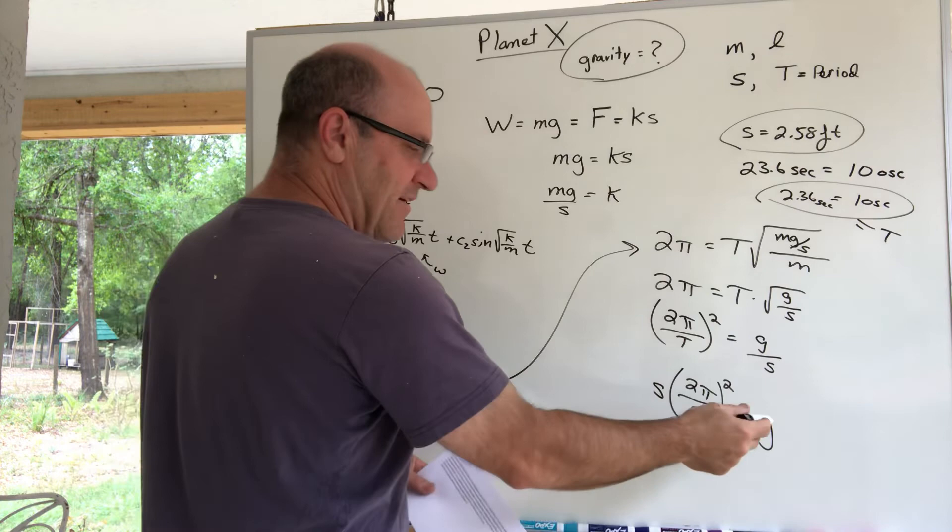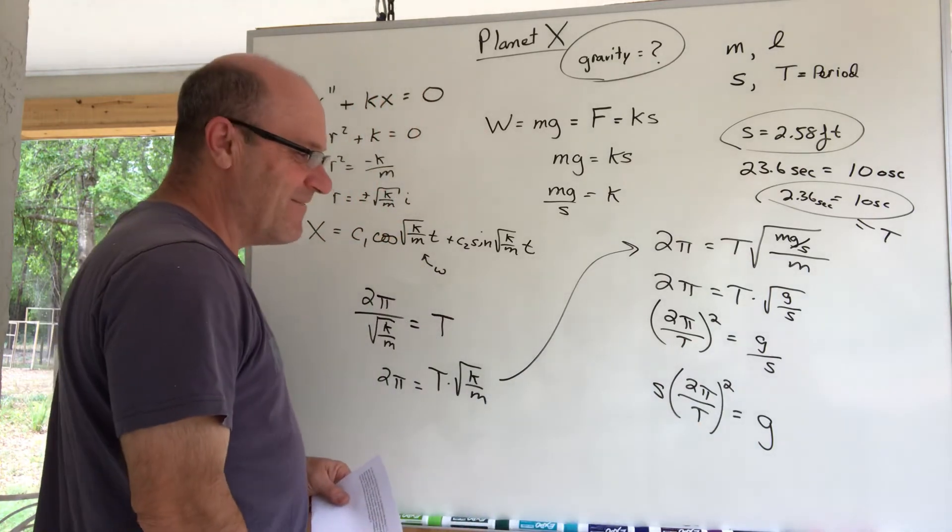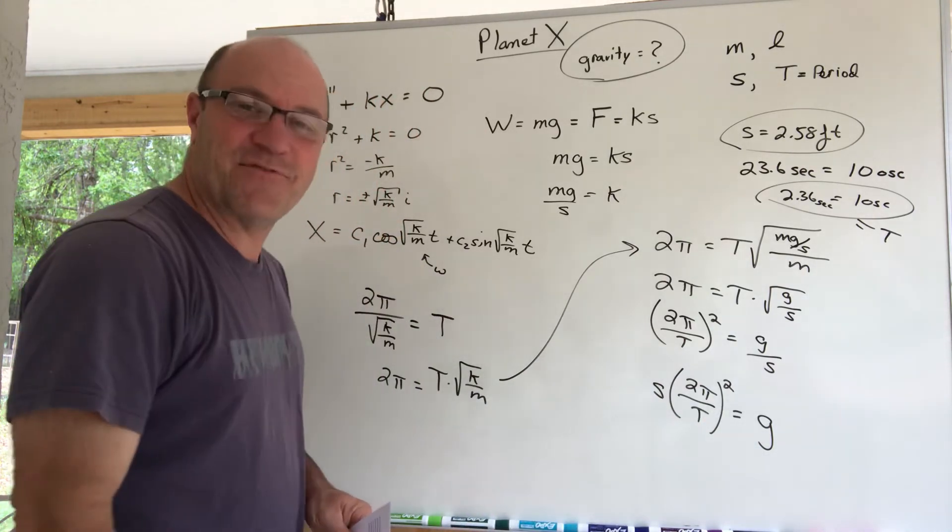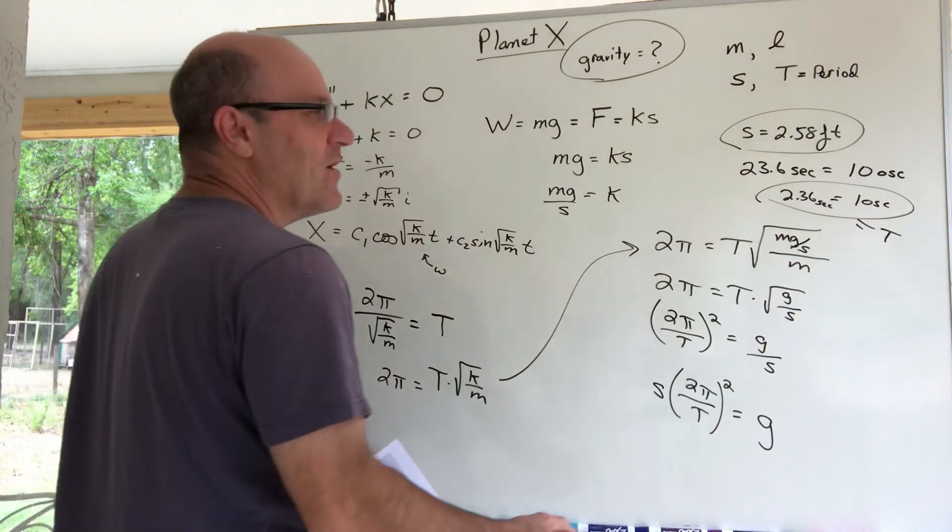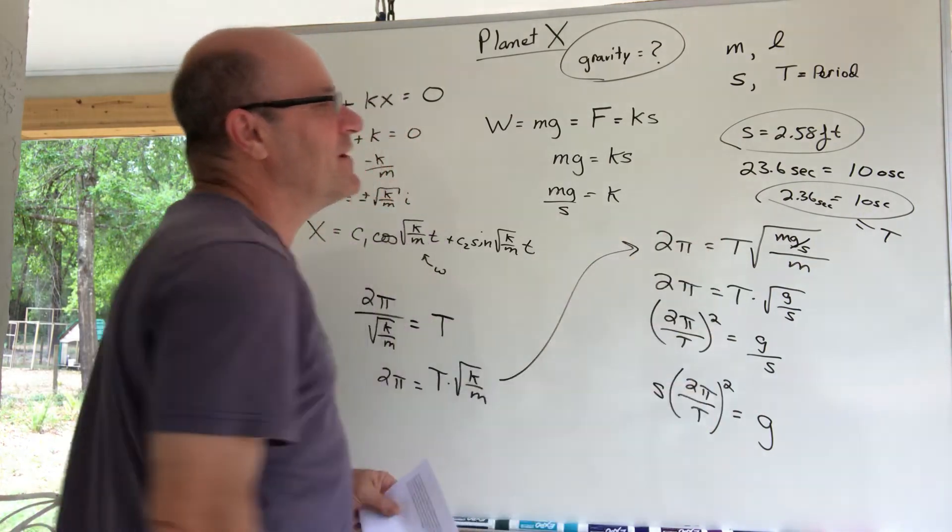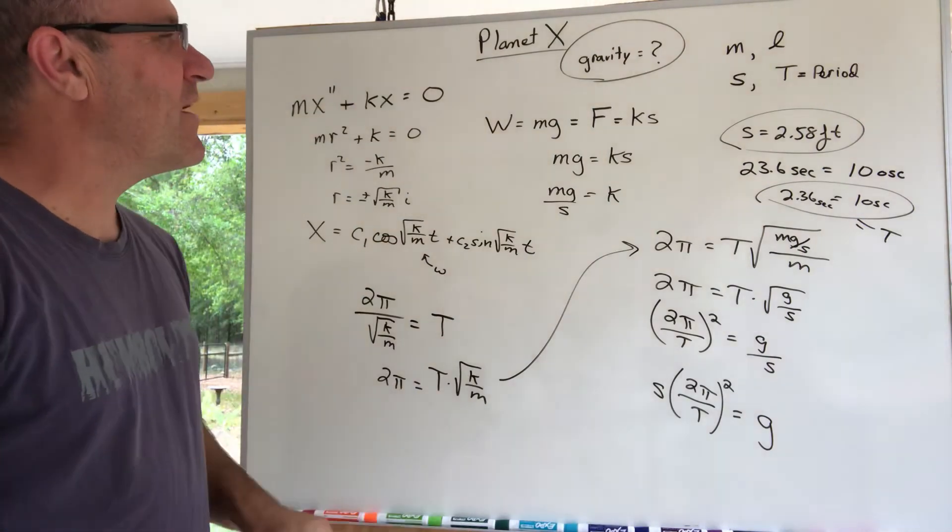Well, divide by 10. One oscillation is 2.36 seconds, that's the period capital T. So I've got T, I've got S, 2π is a number. I think I can calculate g. Wow, that was easy and fun. I don't have my calculator with me, so I think you can finish this from here.